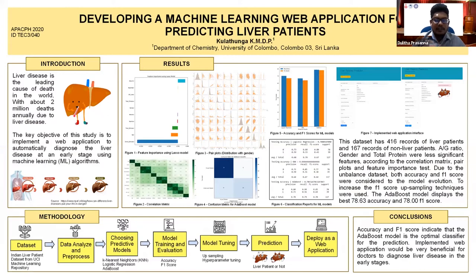Liver diseases are one of the leading causes of death in the world, with around 2 million deaths annually. Liver diseases are highly prevalent and silent — when symptoms are apparent, the disease is already at a severe stage. Therefore, it is important to identify diseases at an early stage.